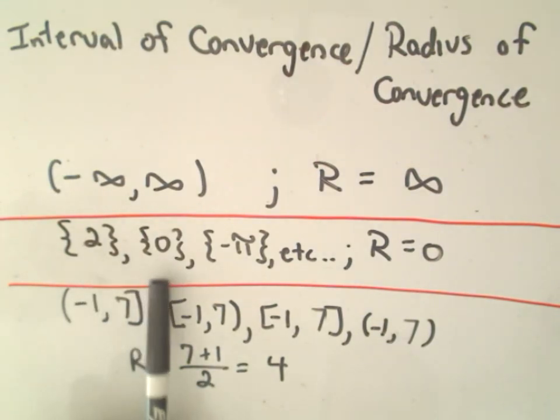If it only converges for a single point, so a trivial solution, then we simply say that the radius is equal to 0.